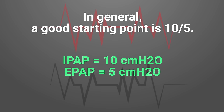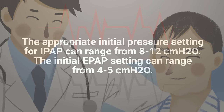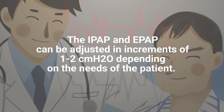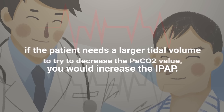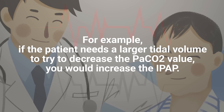This is just a general example — the appropriate initial pressure setting for IPAP can range from 8 to 12 centimeters of water pressure, and the appropriate initial pressure level for EPAP should range from 4 to 5 centimeters of water pressure. Settings can be adjusted in increments of 1 to 2 centimeters of water pressure depending on patient needs. For example, if the patient needs a larger tidal volume to decrease the PaCO2 and blow off CO2, you would increase the IPAP setting.